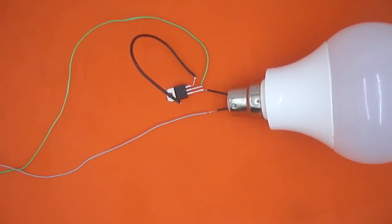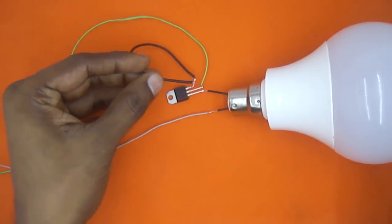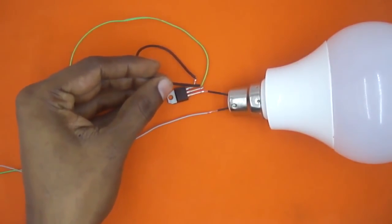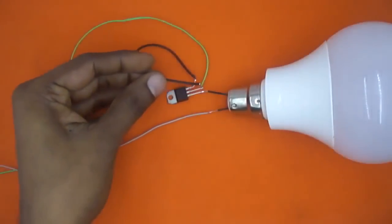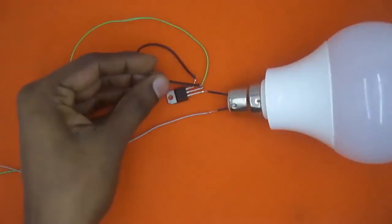So now power supply is connected. Whenever I connect this wire to T2, the bulb should glow. So here you can see, whenever I am touching the power supply to T2, the bulb is glowing.